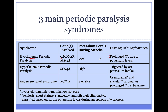Hyperkalemic periodic paralysis is due to variants in a sodium channel, SCN4A. Potassium levels during the attacks are typically high. So if you take in too much oral potassium — either electrolyte drinks or bananas, things that have a lot of potassium — you can trigger an attack if you have hyperkalemic periodic paralysis.